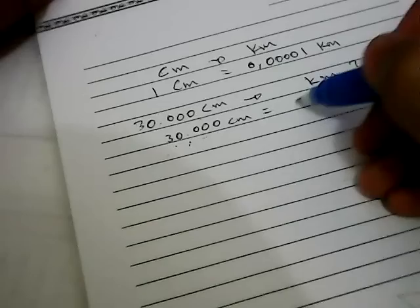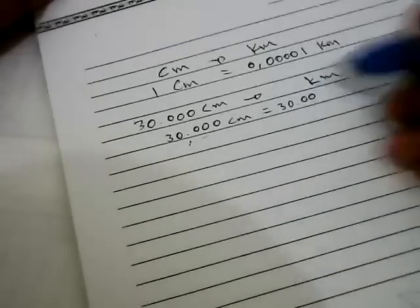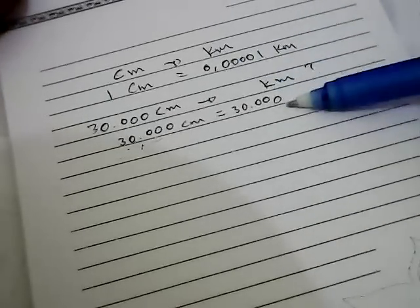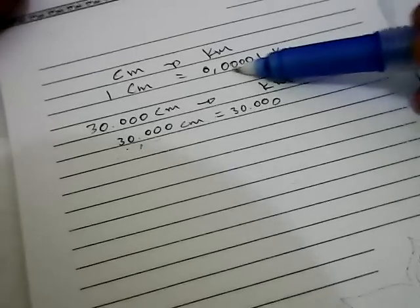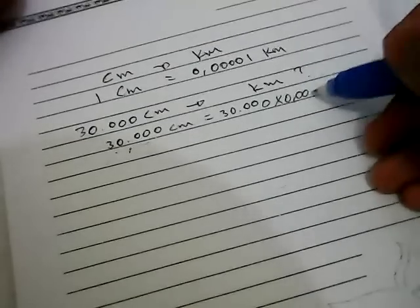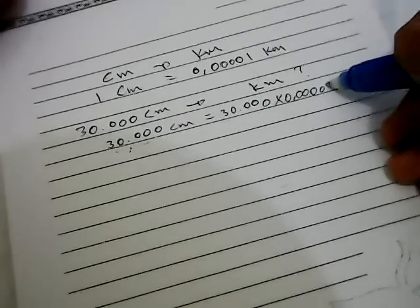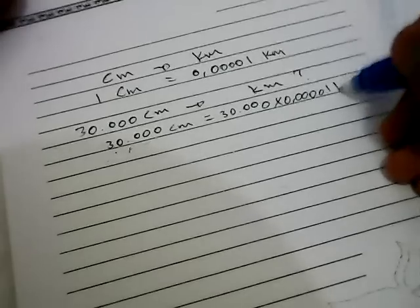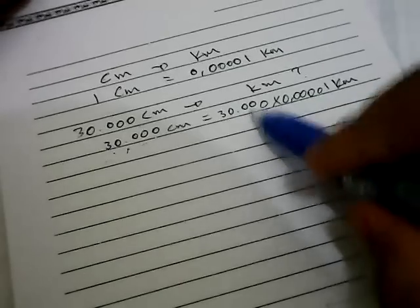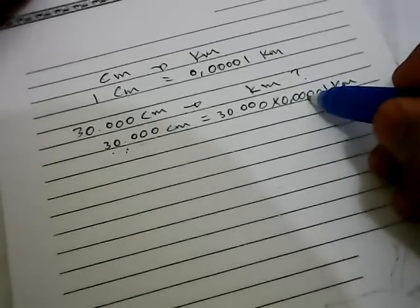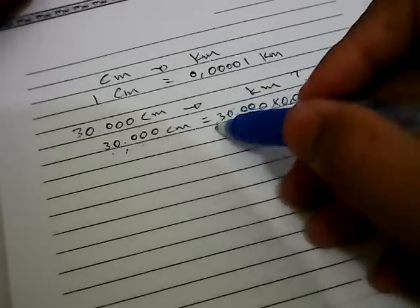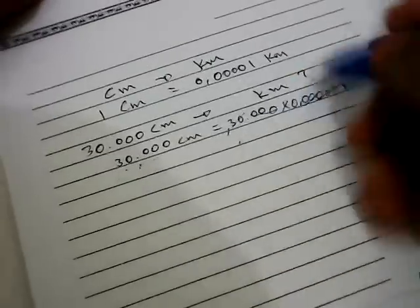We need to multiply this 30,000 with 0.0001, so we need to write it: 0.0001 kilometers. So 30,000 times 0.0001...